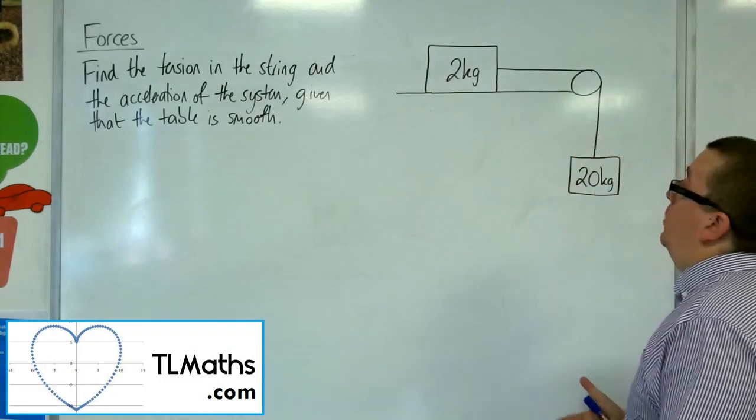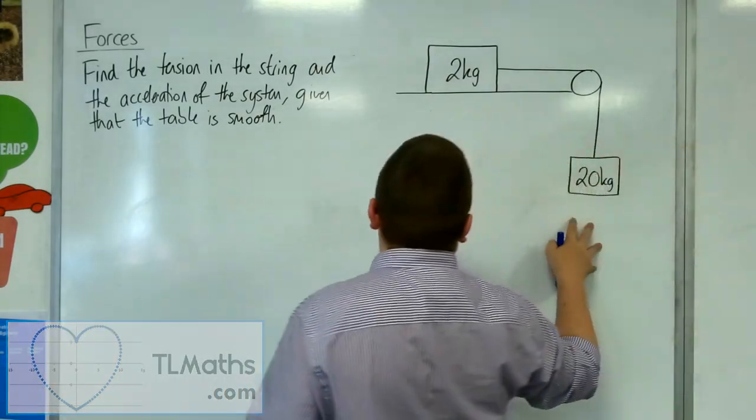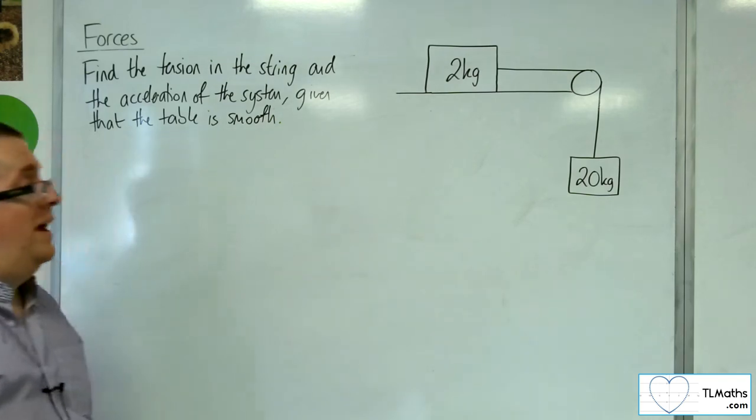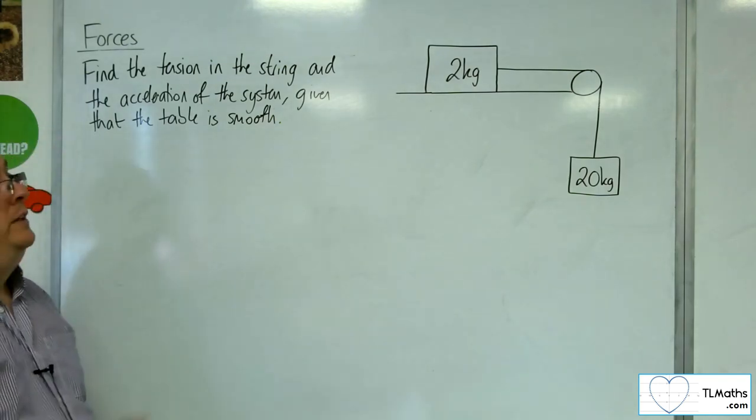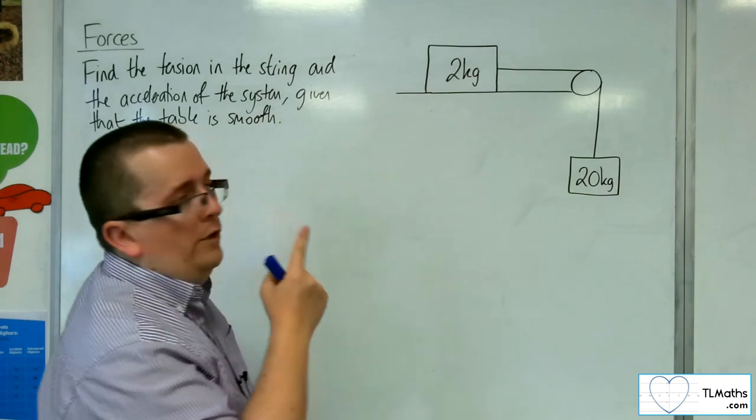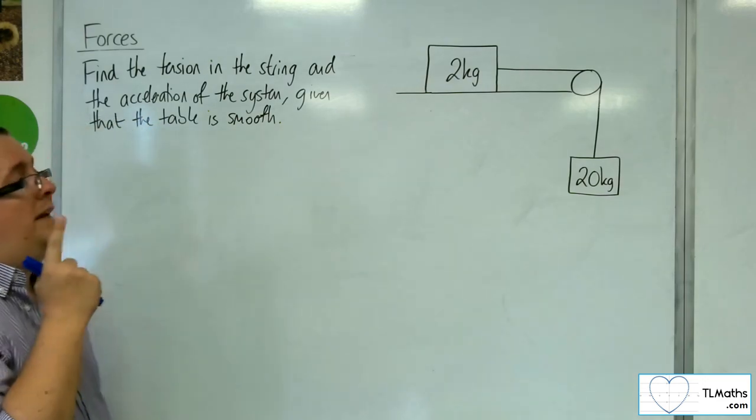Now in this problem we have two particles, one with mass 2 kilos and one with mass 20 kilos. The 2 kilo particle is sat on a table - the table is smooth.